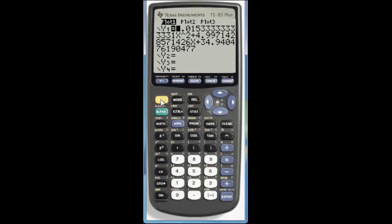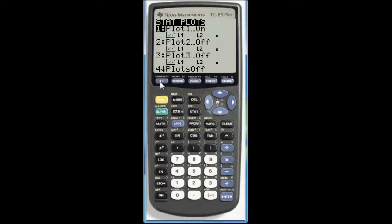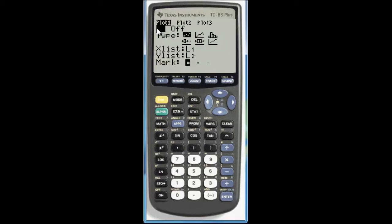Now to graph the data values along with the regression model we're going to have to use the scatter plot. So to graph a scatter plot go to second. And then if you look right above y equals it says stat plot. We're going to want the first option. The first plot. Make sure it's on. Now this first type. Is a scatter plot. It will plot points basically. Based on the values in our two lists.